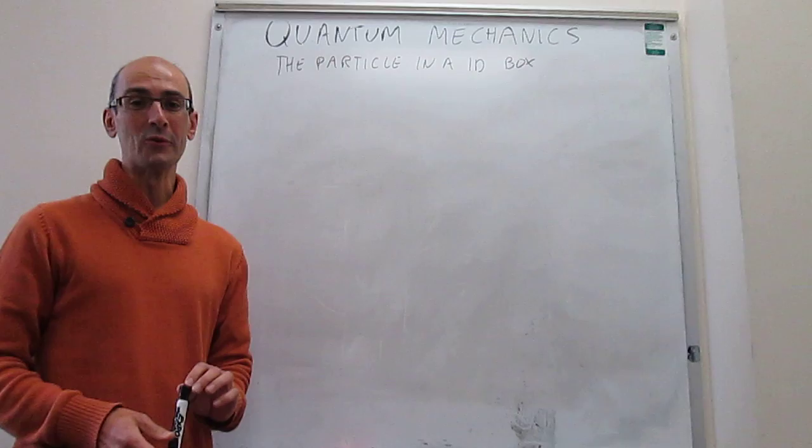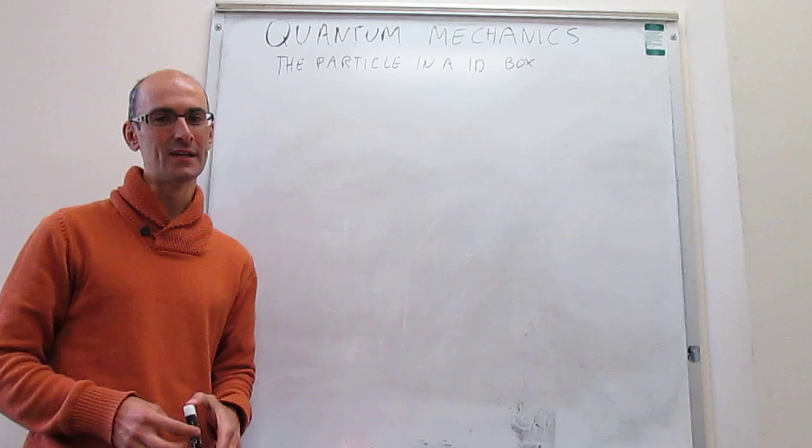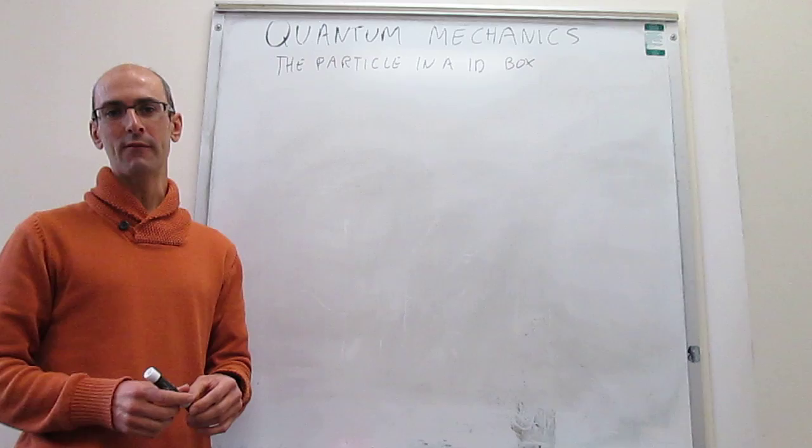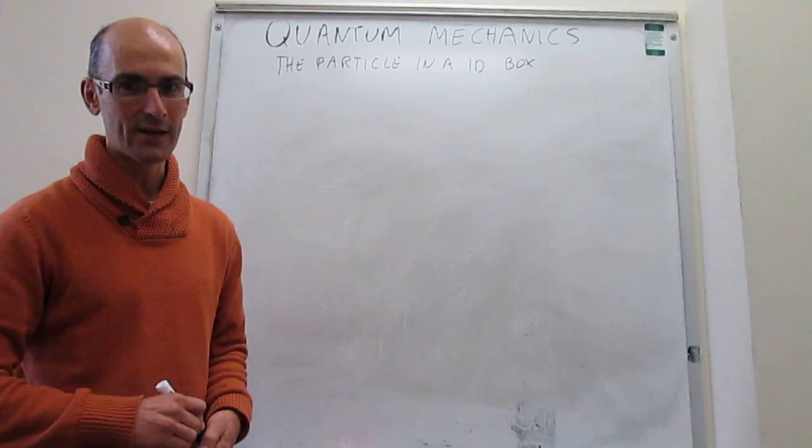In the last couple of videos we have solved the Schrödinger equation for the particle in a 1D box model and we have attempted to interpret what the solutions to the equation are. Now what we actually do is try to further interpret those solutions by applying the model to understand the behavior of the electrons in a real molecule.